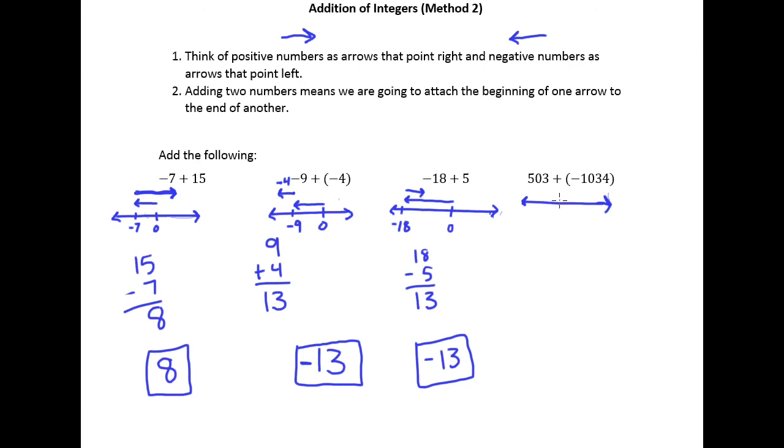So I put zero here. Here's 503, we'll say 503 is about right there. And then I'm adding negative 1034. Well, the beginning of negative 1034 starts here, but it is a left pointing arrow, so it's going back and it's definitely going to make it across zero. It's definitely going to make it across zero because its length is going to be greater than 503's.